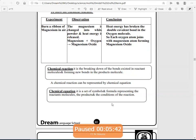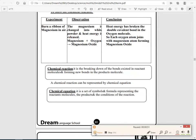The chemical reaction is a breaking down of the bonds existing in the reactant molecules to form new bonds in the product molecules. You have to know that the chemical reaction must be represented by chemical equation.